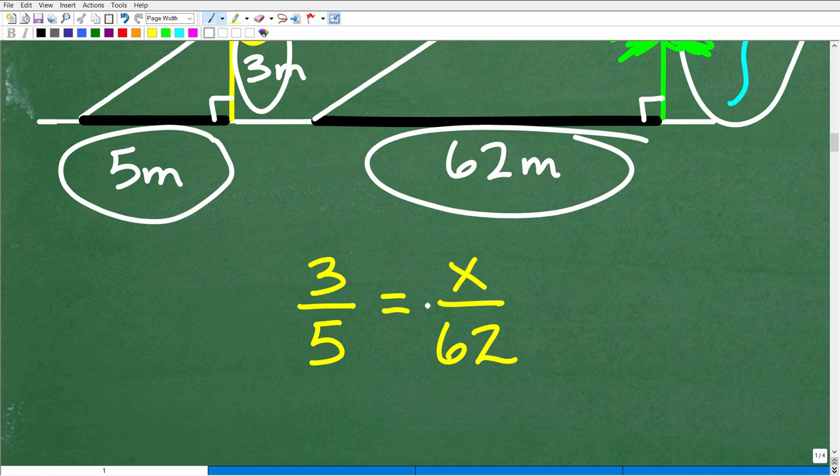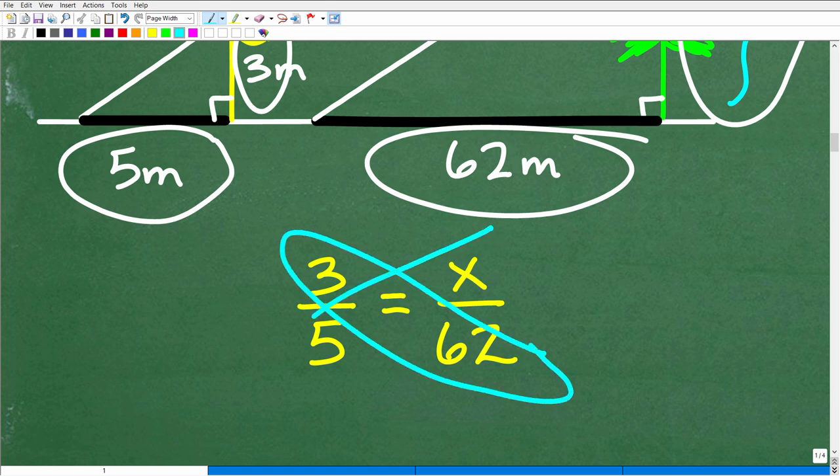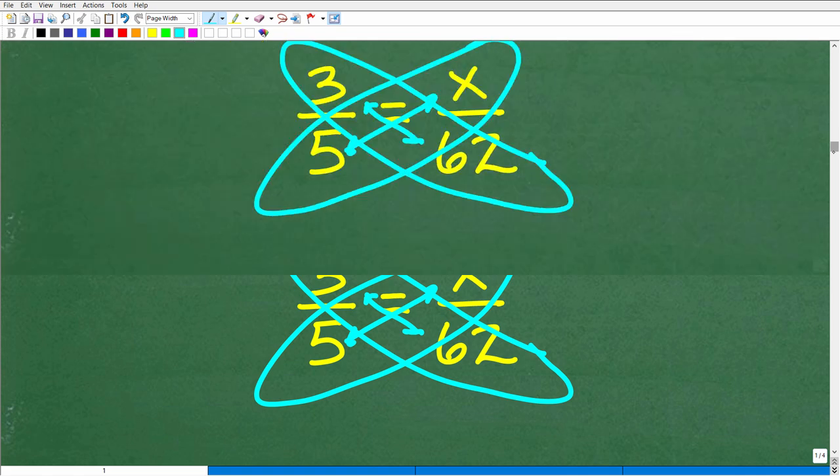So again, the sides of similar triangles, the respective sides, or corresponding sides, excuse me, that's the word I was looking for, are going to be in proportion. So what that means is we can set up these proportions and solve. And remember, in mathematics, a proportion is two equal fractions, and to solve a proportion, all we need to do is use the cross product. We just simply multiply a cross, so 5 times x is going to be equal to 3 times 62, and we can solve very easily for x. Let's go and do that right now.